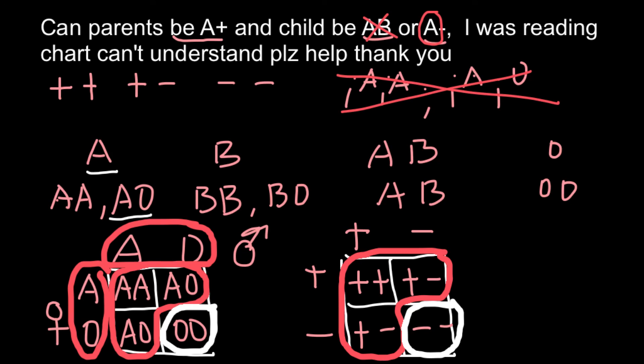As you see, Rh positive parents that belong to the blood group A may have a child that also would belong to the blood group A and would be Rh negative.